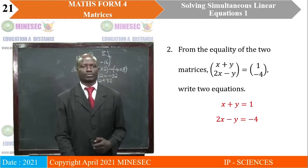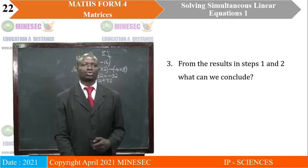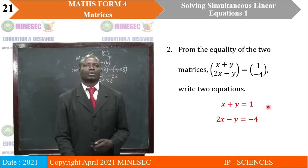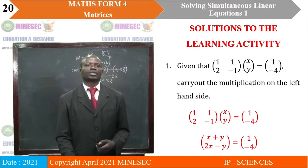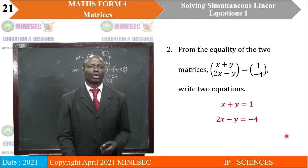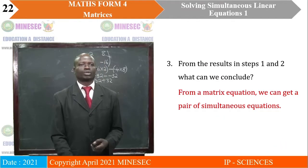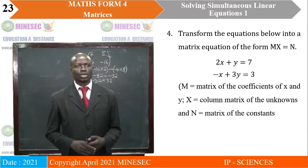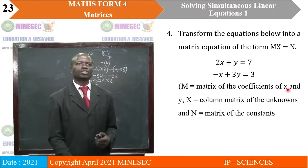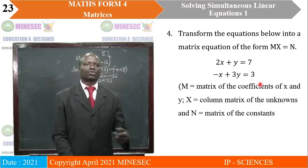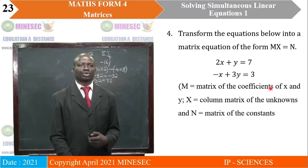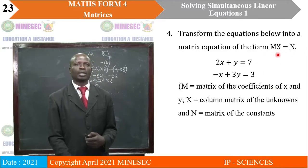From the results in steps 1 and 2, we can conclude that when we multiply two matrices, it can result in two simultaneous equations. The conclusion is that from a matrix equation, we can get a pair of simultaneous equations. Now, technically the reverse: we have two simultaneous equations, which we want to transform into a matrix equation of the form M times X equals N.